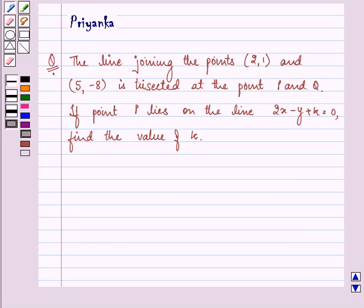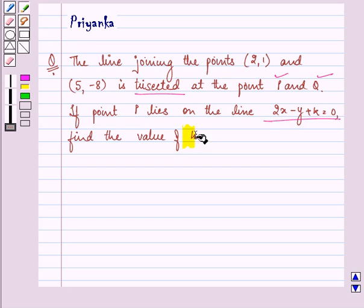Hello friends, how are you all doing today? The question says the line joining the points having coordinates (2,1) and (5,-8) is trisected at the point P and Q. If point P lies on the line 2x minus y plus k equals 0, find the value of k.